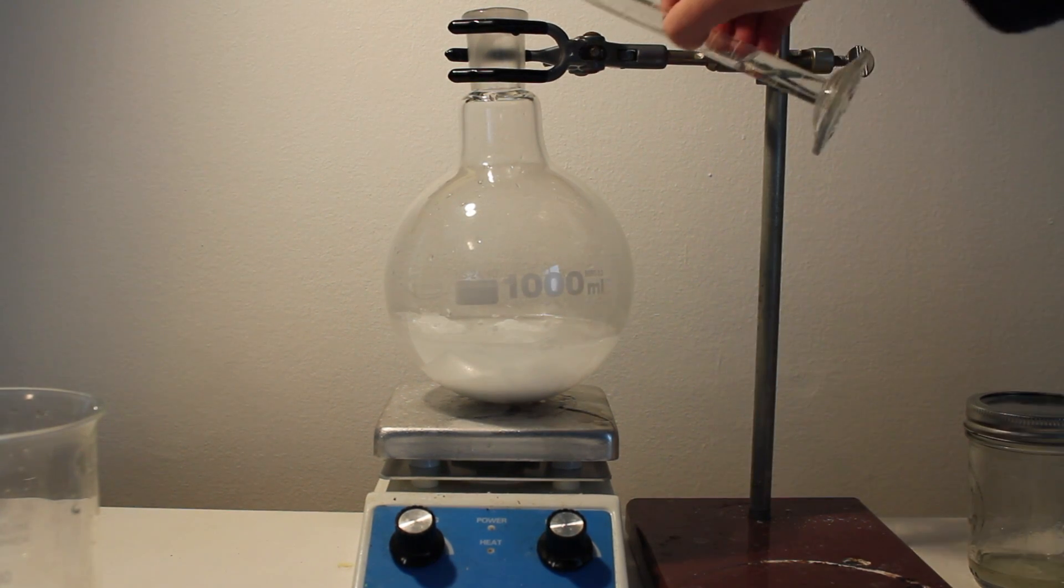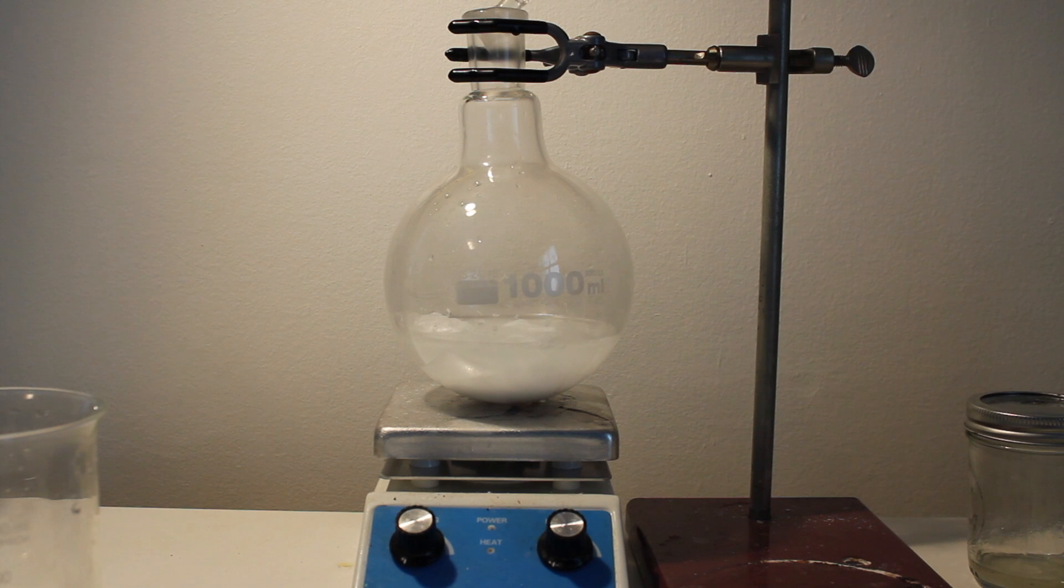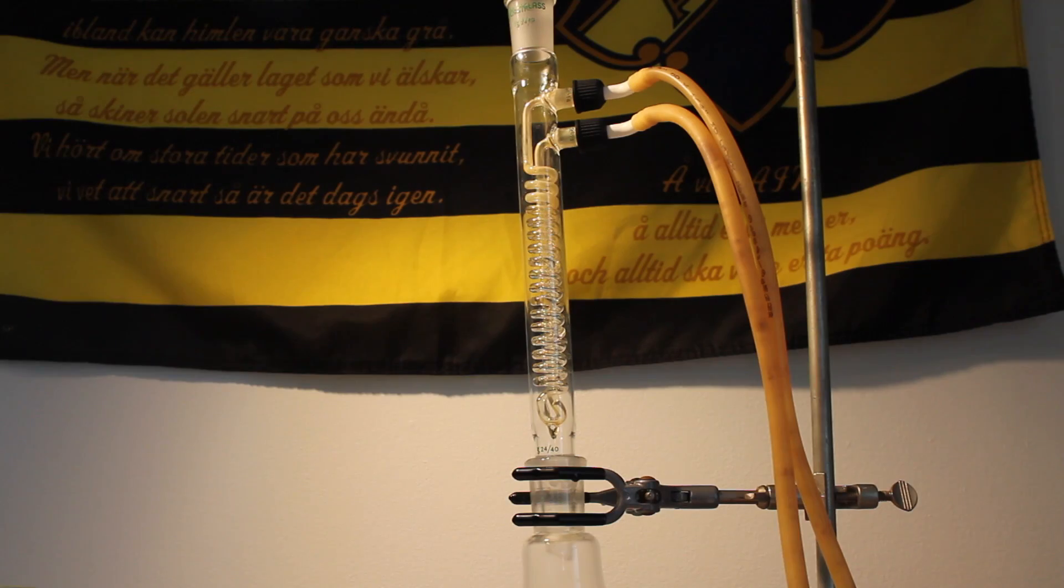Next, add 3.3 milliliters of concentrated hydrochloric acid. Then add a reflux condenser.